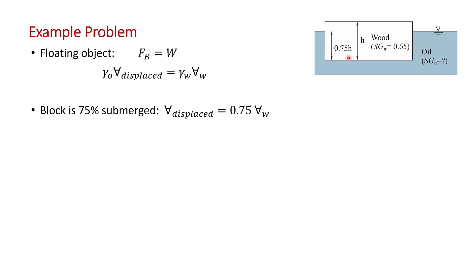And you're told in the problem that the wood block floats with 75% of its volume submerged. So the displaced volume is equal to 0.75 of the total volume. We can make the substitution in here for the displaced volume equaling 0.75 of the total volume. And we get this expression.